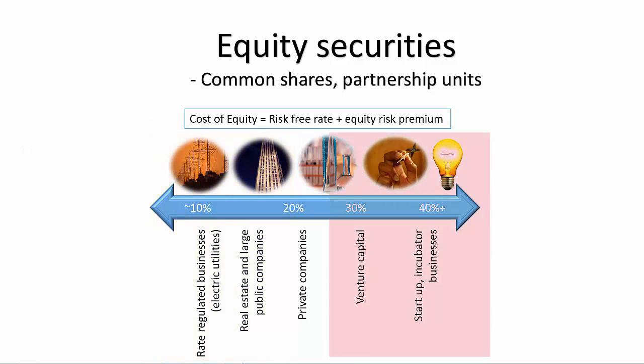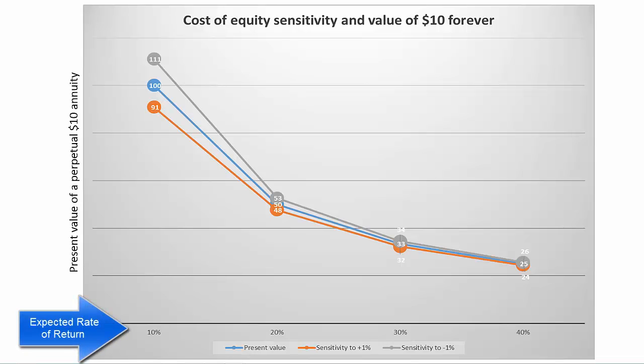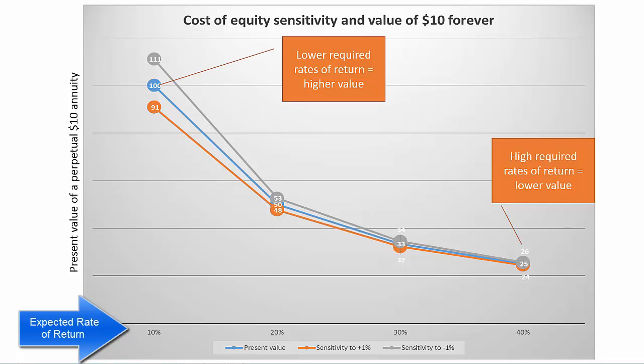As you get further to the right of the spectrum, you start getting into businesses that are smaller, perhaps in startup, trying to develop a business in a new market. As the risk of failure is significantly higher, so too is the required rate of return. If you plot this spectrum on a chart, it gives you another perspective of how the required rate of return impacts the value of any investment security — small rates of return create much higher valuations than large rates of return.